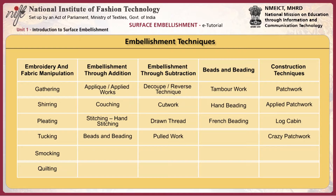In the gathering method, threads stitched through fabric are drawn together to reduce the fullness of the material to a required width. The stitches may be worked by hand but usually by industrial machinery. In the shirring method, parallel rows of stitches are worked to reduce the fullness of a material to a required width. Pleating is a method of folding material to control fullness. The main types of pleating are box, cartridge, fan, inverted, and knife pleats. Tucking is a method of folding fabric to control fullness or to create decorative effects, stitched by hand, machine, or industrial machine such as the pintuck machine.